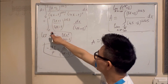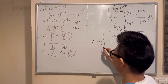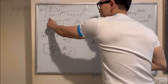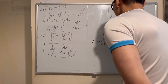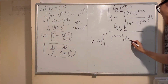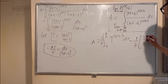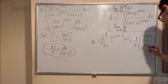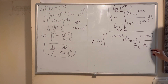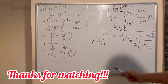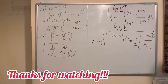Now for the new limits: if x equals 0, t equals negative 1. If x equals 1, t equals 4 over 3. So the integration runs from negative 1 to 4 over 3.